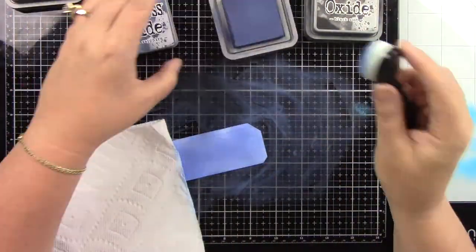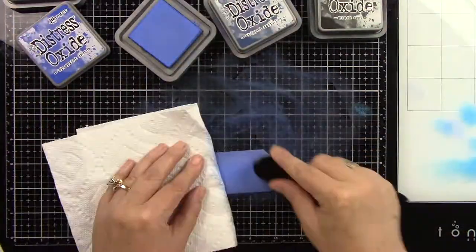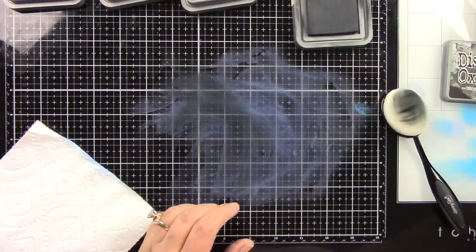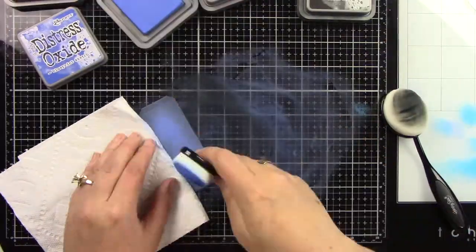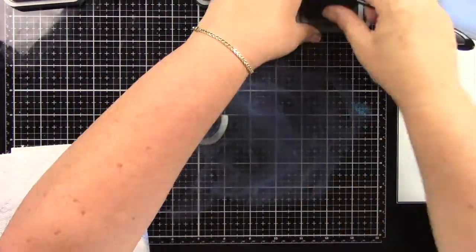Here is this pocket piece. I started with Blueprint Sketch, coming in with Chipped Sapphire, then using Black Soot around the edges. I'm using blender brushes to get a really nice blend, then I came back in and added a little bit of the Salty Ocean to the center.